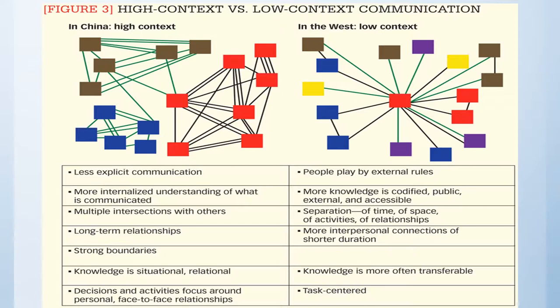The charts above give you an idea of what those lines of communication look like. In the West, you are the single point for distributing information. However, if you go to China, for instance, you see that there are circles within circles of how information is communicated or decisions get made.